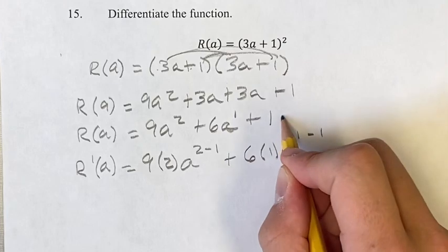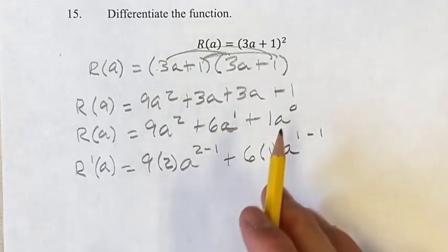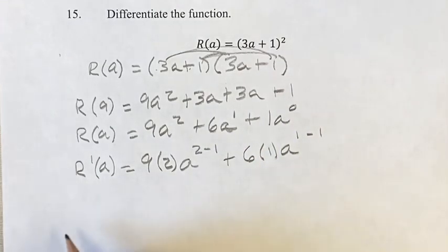This 1 is basically 1 times a⁰, so bringing down the 0 would just make this whole term 0. You can just think the derivative of a constant is always 0, and we don't have to worry about it.